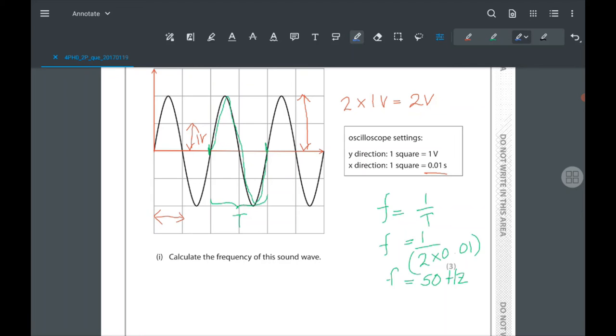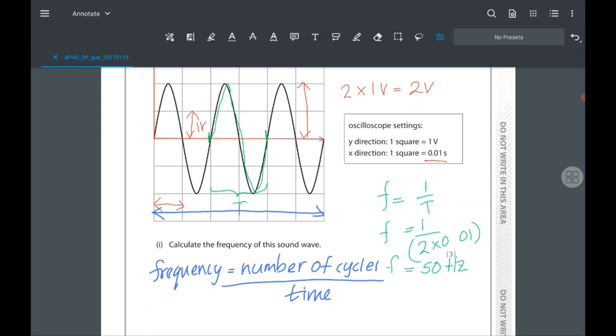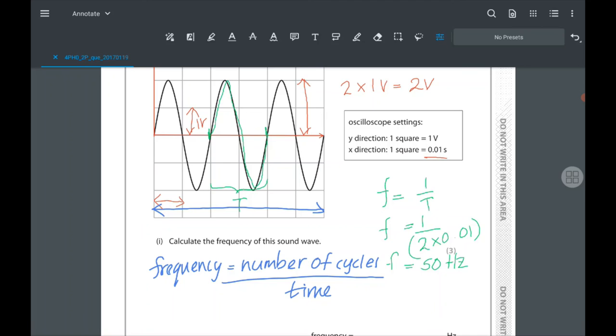Now in this one, you can see there are three complete cycles—these are the number of cycles. You can use the other equation for frequency, which is frequency equals number of cycles divided by time. If you look at this example, you can see there are six squares taken. So that number of cycles is three divided by six times 0.01.